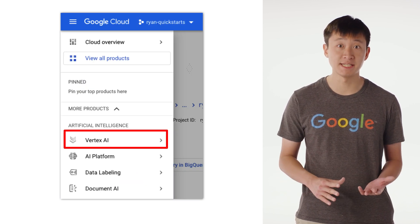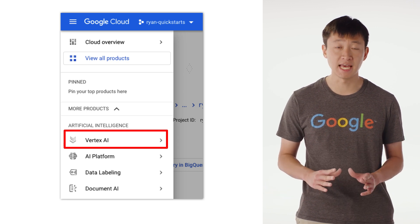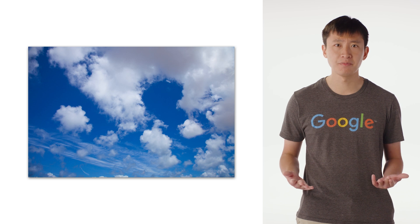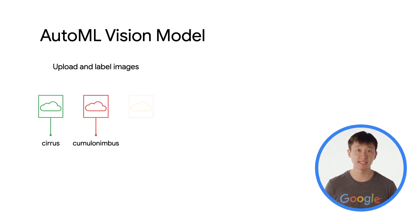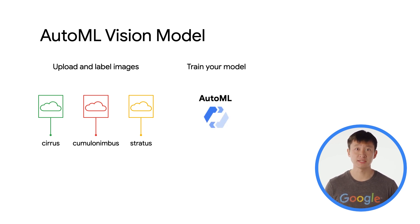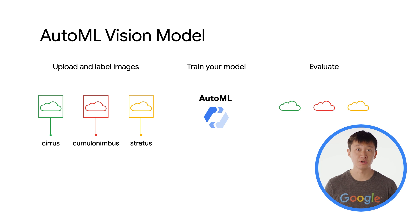These are all accessible via the Vertex AI section of the Google Cloud Console. Let's take a look at an example AutoML use case. Perhaps you're a meteorologist looking to use machine learning to identify different types of clouds, like Cirrus, Cumulonimbus, or Stratus. With the pre-trained Vision API, you might be able to identify that there are clouds in an image, but not what type they are — this more specific task requires a custom dataset. With AutoML Vision, you can upload your own custom image dataset of clouds, each labeled as Cirrus, Cumulonimbus, or Stratus. Google Cloud will then use this custom training dataset to train a model, and you'll be provided with a prediction endpoint to classify new images. You'll also be able to see evaluation metrics like precision, recall, and the confusion matrix.